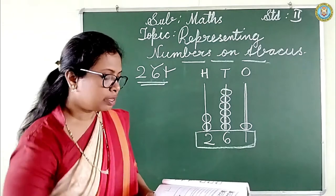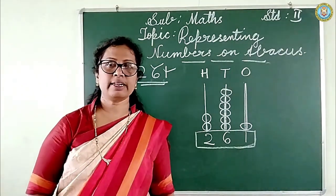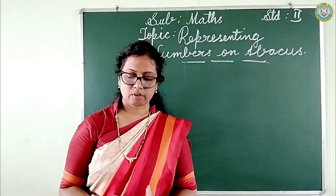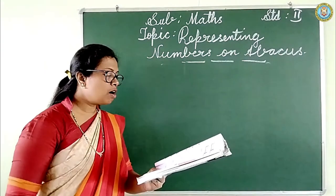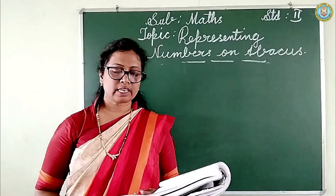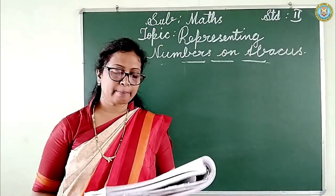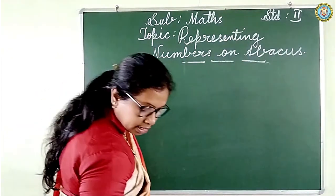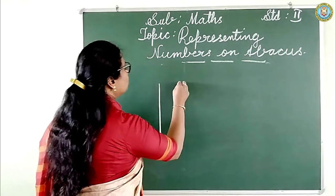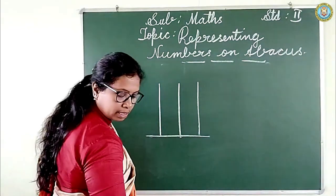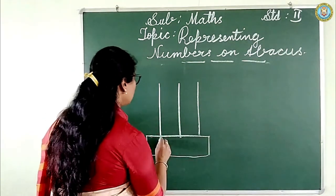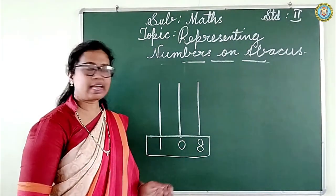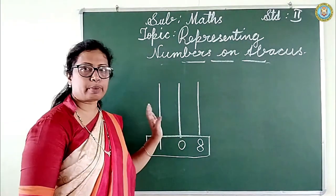To understand better, let us do exercise 2.5, given in page number 83 and page number 84. I will do only one on the board; the remaining you do yourselves. Draw the correct number of beads on the given abacus.